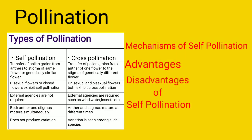Students, before starting the next topic, let's first do a small revision of our last class. The last class was all about the definition of pollination, which is the transfer of pollen grains from one flower to another flower or within the same flower. Types of pollination: it is of two types — self-pollination or autogamy, and cross-pollination or allogamy.